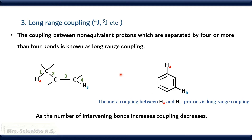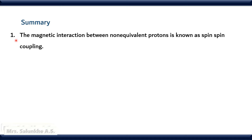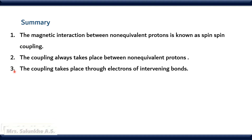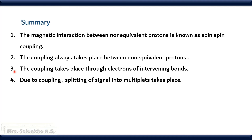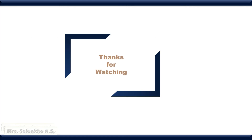Thus, coupling takes place through electrons of intervening bonds, and as the number of intervening bonds between non-equivalent protons increases, coupling decreases. In summary: the magnetic interaction between non-equivalent protons is known as spin-spin coupling; coupling always takes place between non-equivalent protons; coupling takes place through electrons of intervening bonds and not through space; due to coupling, splitting of signal into multiplets takes place; and the coupling between non-equivalent protons is of three types — vicinal, geminal, and long-range coupling. This is all about spin-spin coupling and spin-spin splitting.